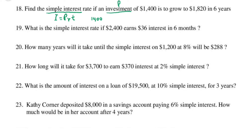The total amount is 1,820. Principal plus interest equals 1,820, so interest I is 1,820 minus 1,400.